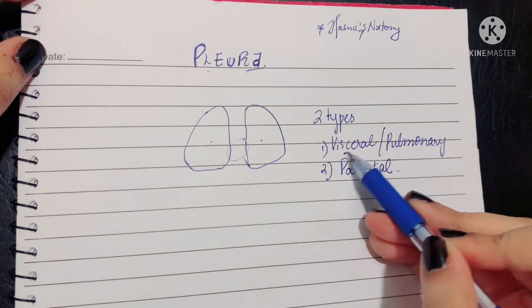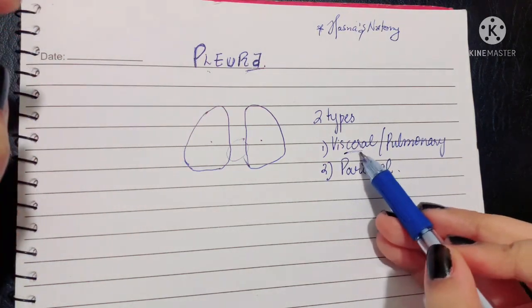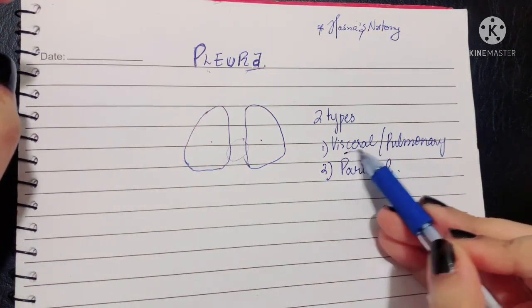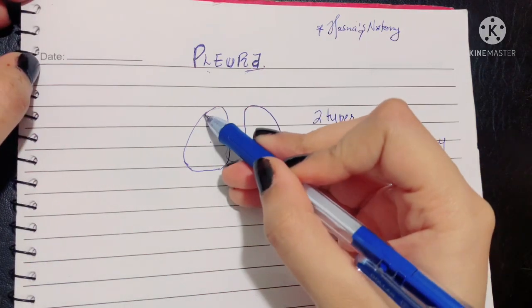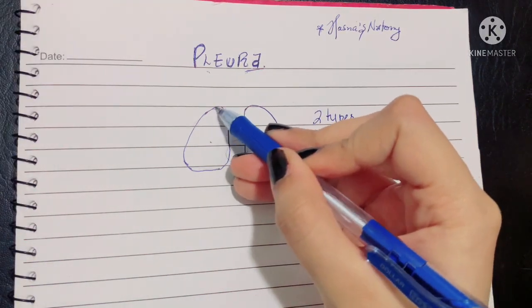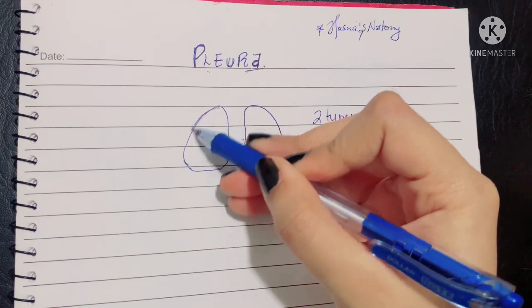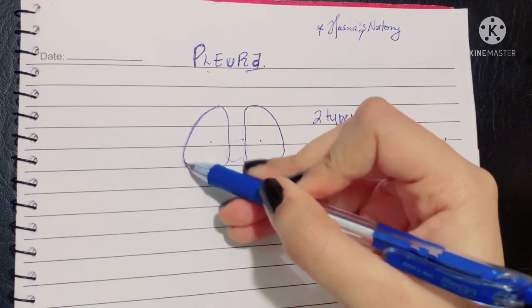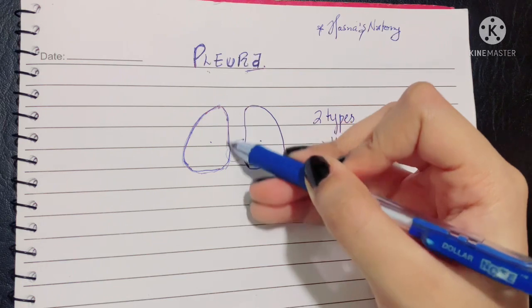Visceral or pulmonary—the name indicates that viscera means an organ. This means that this pleura is adherent to the lungs. The visceral pleura corresponds to the lining of your lung because it is completely adherent to your lung.